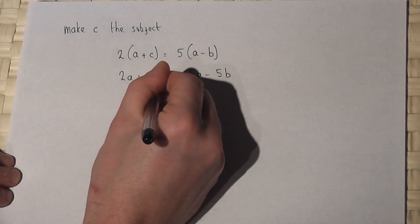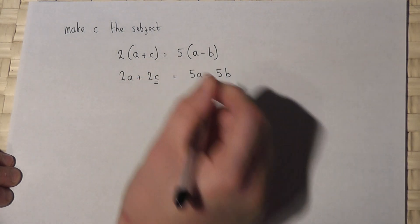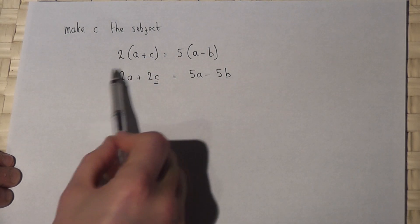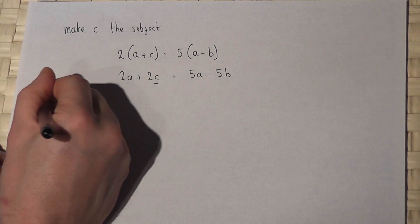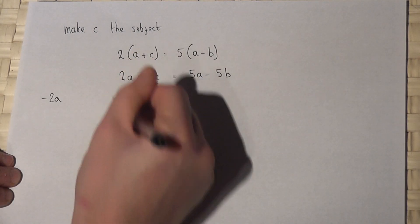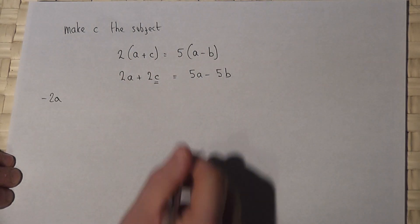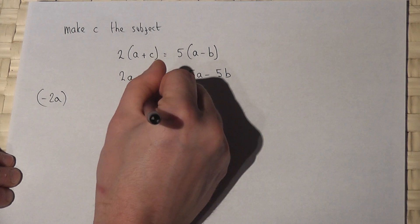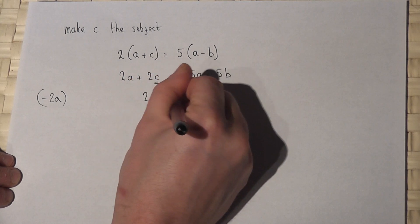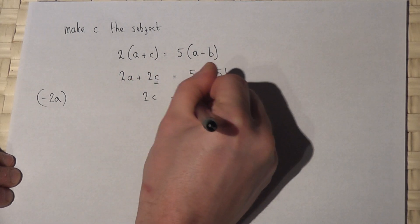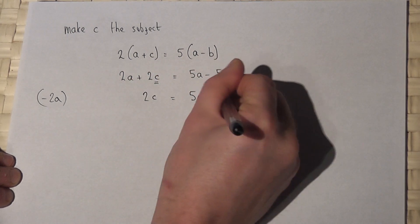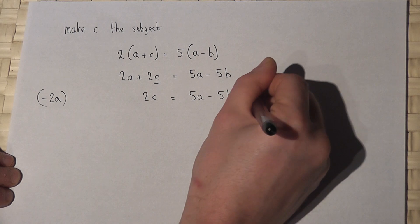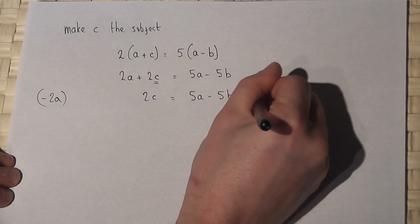So I want to make C the subject, so I want to get rid of the 2a. If I take away 2a from both sides, that will cancel off, so I'm left with 2c is equal to 5a minus 5b minus 2a.